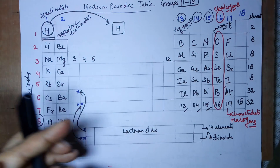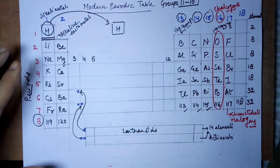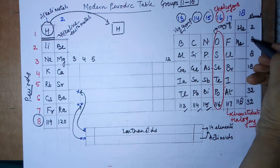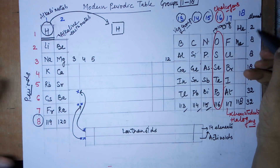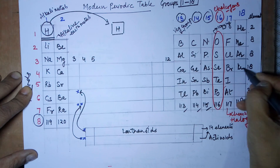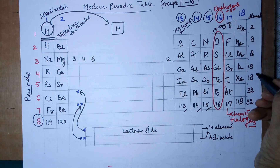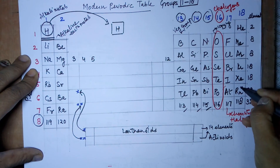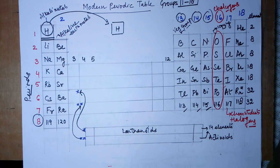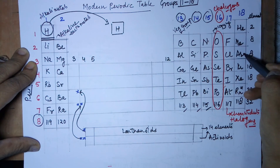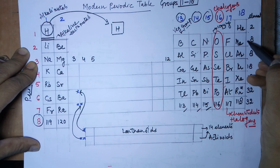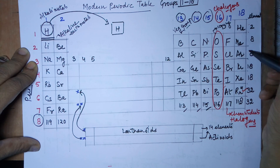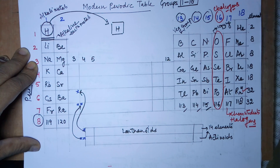Coming to the last group — the 18th group, the noble gases. The elements are helium, neon, argon, krypton, xenon, and radon. The last member is radioactive. The easy mnemonic is: 'Heena, Neena, aur Kareena ka X-ray rangin' — that's your group number 18, the noble gases.